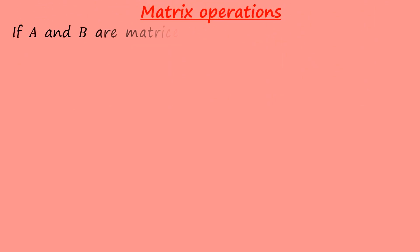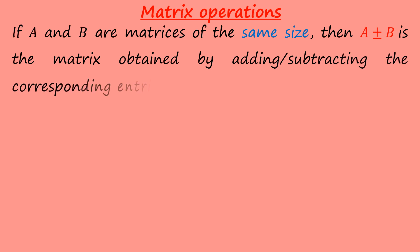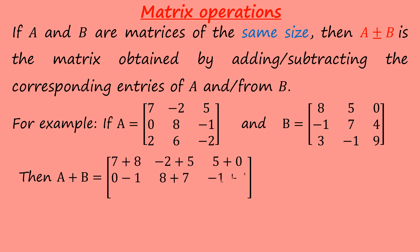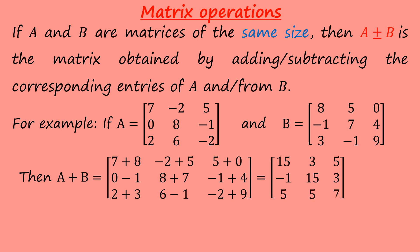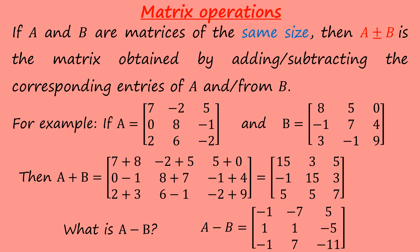Matrix operations: if A and B are matrices of the same size, then A plus or minus B is the matrix obtained by adding or subtracting the corresponding entries of A and B. For example, we have A and B both as 3 by 3 matrices. For A plus B, we add the corresponding entries together and we have 15, 3, 5, -1, 15, 3, 5, 5, 7. What is A minus B? Please pause this video and try the question before you proceed. You are supposed to get this result.